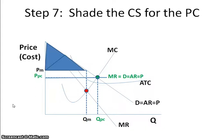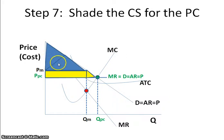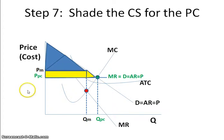Step 7: Shade the consumer surplus for the perfectly competitive firm. Because the perfectly competitive firm charges a lower price and has a larger output, the consumer surplus is not only what the monopoly had, but also this extra amount. The takeaway is that consumer surplus for a perfectly competitive firm is larger than consumer surplus with a monopoly.